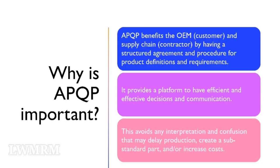Why is APQP important? APQP benefits the OEM, customer, and supply chain contractor by having a structured agreement and procedure for product definitions and requirements. It provides a platform to have efficient and effective decisions and communication. This avoids any interpretation and confusion that may delay production, create a substandard part, and or increase costs.